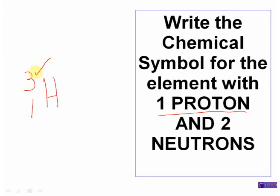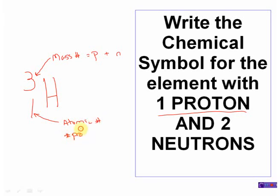In summary: the top number is the mass number, which is simply a combination of protons plus neutrons. On the bottom is the atomic number, which is another way of saying the number of protons — that's the number of protons in the nucleus of that element. The element symbol, like H, comes from the periodic table: the element with one proton is hydrogen. That's it for today — if you have any questions please let me know, and if you enjoyed the video please give me some feedback. Thanks a lot.